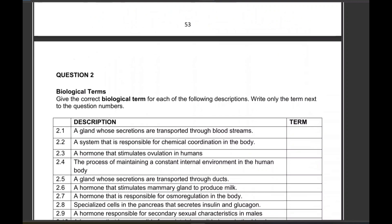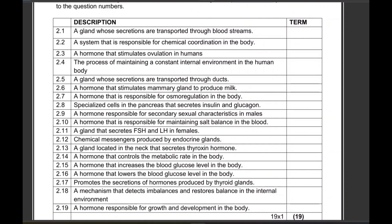Let's go to terminology. A gland whose secretions are transported through the bloodstream — that is an endocrine gland. A system responsible for chemical coordination in the body — that is the endocrine system.